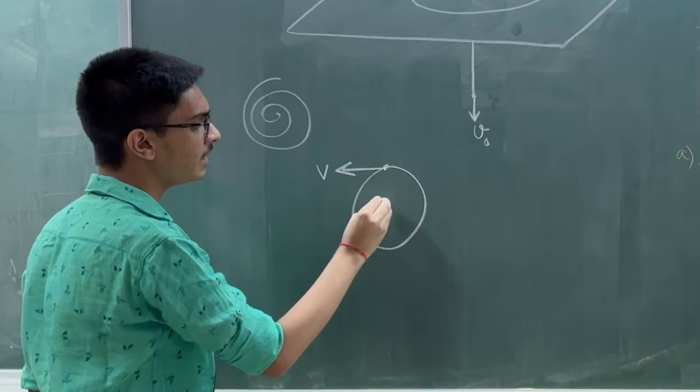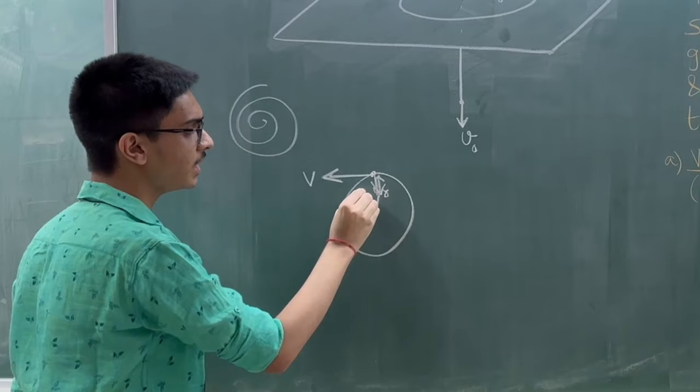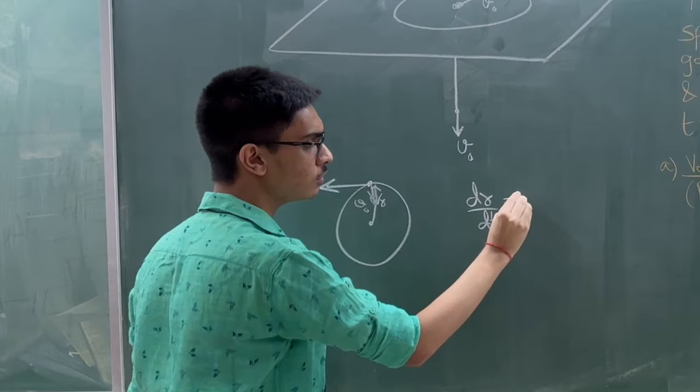If at any instant the velocity is v, the radius is r, and the speed is u₀, then I can very easily say dr/dt is equal to minus u₀.